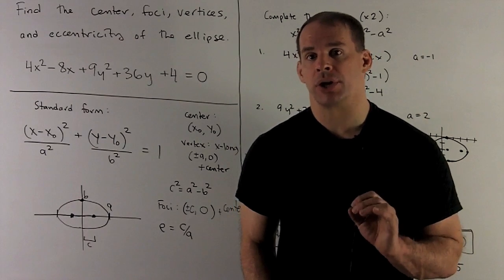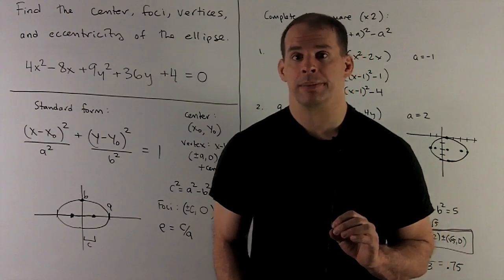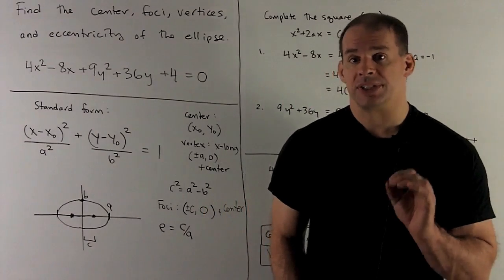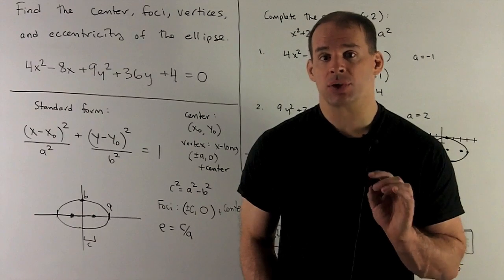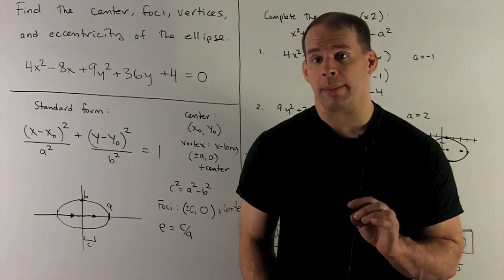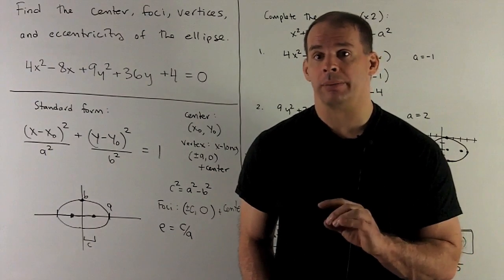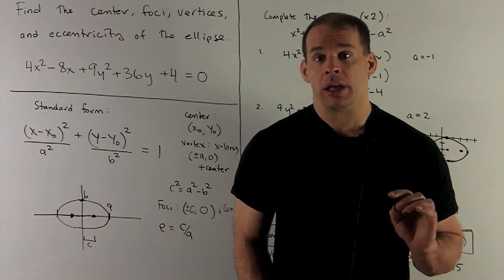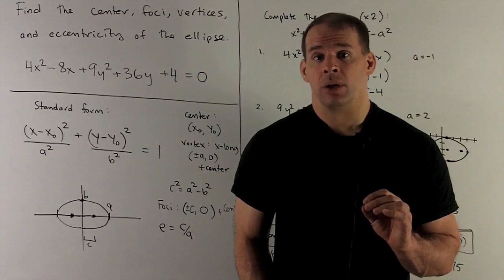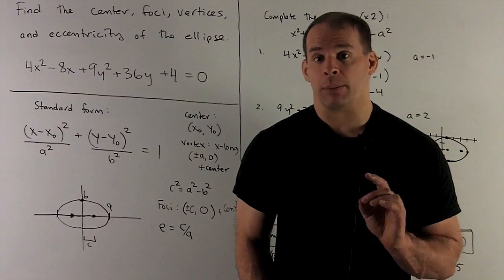Let's review each of those terms and the standard equation of the ellipse. The standard equation of the ellipse will be (x - x₀)²/a² + (y - y₀)²/b² = 1. This will be the equation when the ellipse is long in the x direction, which means a will be larger than b, and a and b are both positive.